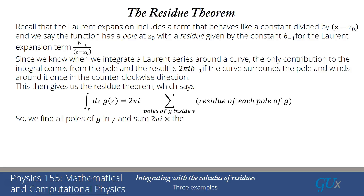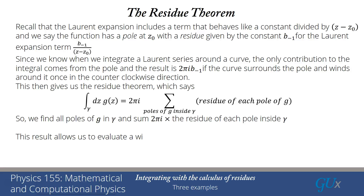So what we have to do is find all the poles inside the curve and multiply by 2πi times their residues and sum them all up. This result allows us to evaluate a wide range of different integrals, and it becomes a very powerful tool for calculating integrals — one that you've never seen before.